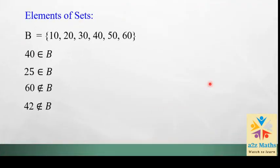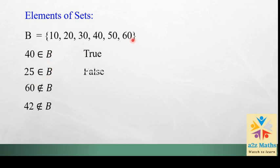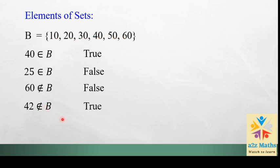Let's do some examples quickly. We have set B = {10, 20, 30, 40, 50, 60}. Is 40 ∈ B? Yes, it exists — true. Is 25 ∈ B? No, 25 is not present — false. Is 60 ∉ B? 60 is present in B, so the statement '60 is not an element of B' is false. Is 42 ∉ B? 42 is not present, so this statement is true.